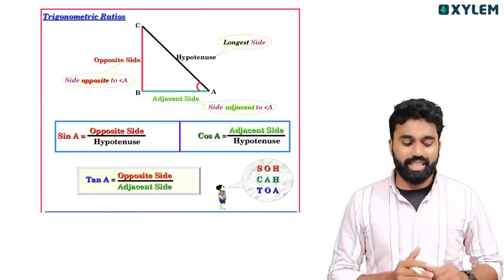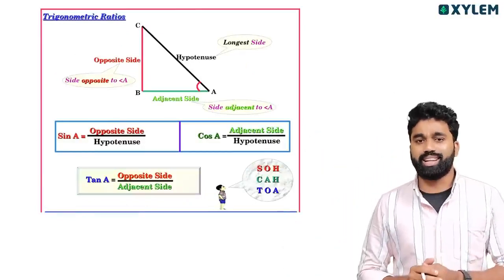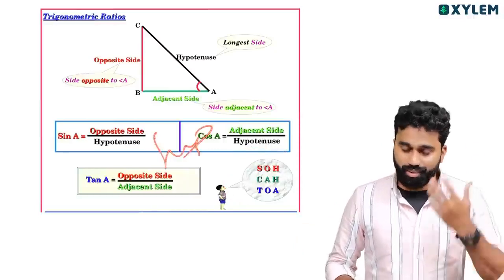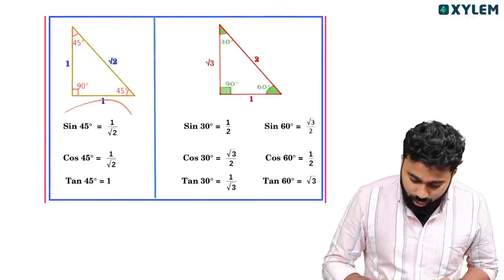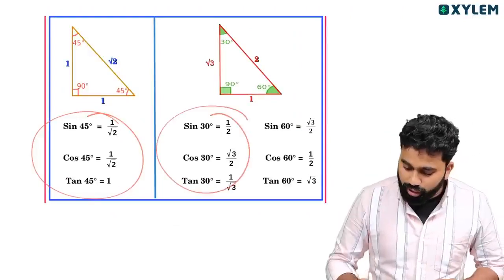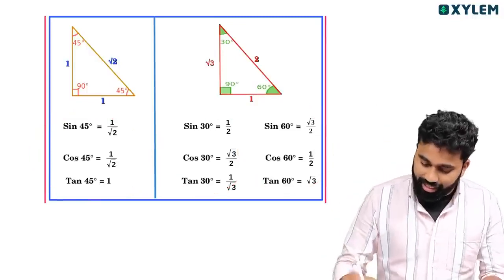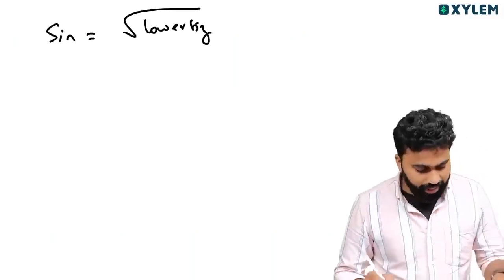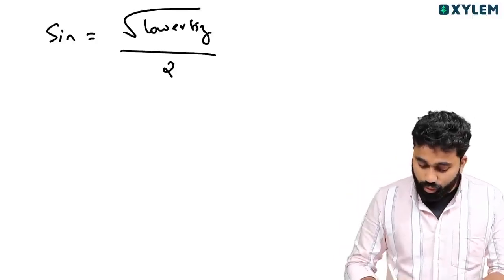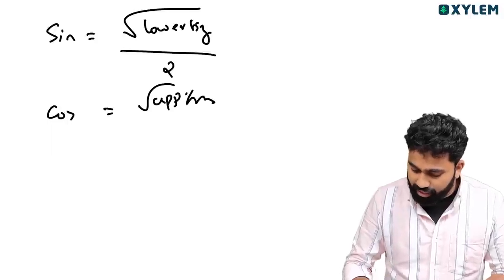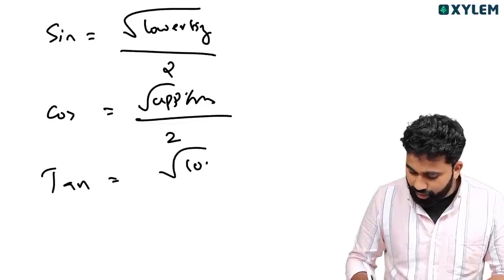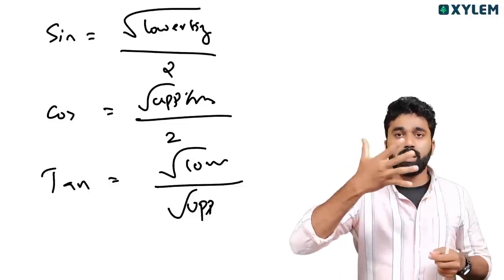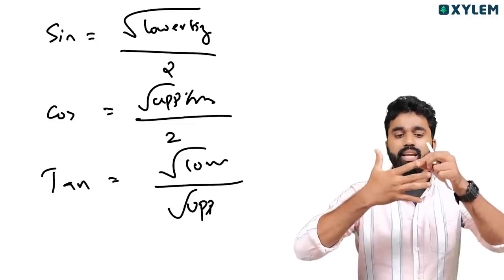Now let's make the trig value table using the finger trick we discussed during the live video. Write the degrees: 0°, 30°, 45°, 60°, 90°. For sin, the trick is: the value equals the square root of the finger number divided by 2. For cos it is the square root of the upper fingers divided by 2. For tan it is the square root of the lower fingers divided by the square root of the upper fingers.